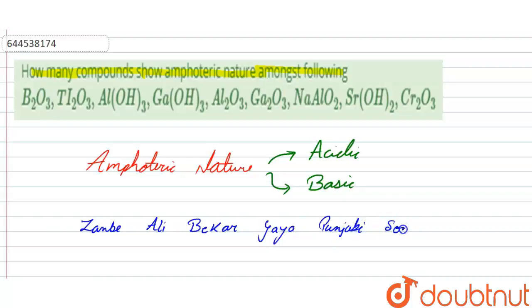So from Zanabe we can remember Zn, from Ali we can remember Al, from Bekaar we can remember B, from gaya we can remember Ga, from Panjabi we can remember Pb, and from song we can remember Sn.